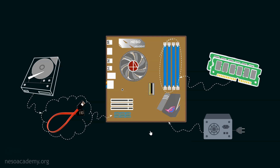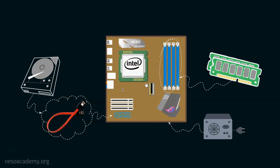Now let's get into the functionalities. We store our data more permanently inside the secondary auxiliary storage. When we want to run our applications, we store them temporarily on the main memory. The question is: which unit actually helps us execute the instructions within the applications? The answer is the processor. It is underneath this heat sink — this is the central processing unit or CPU. However, engineers nowadays preferably call it the microprocessing unit or microprocessor.